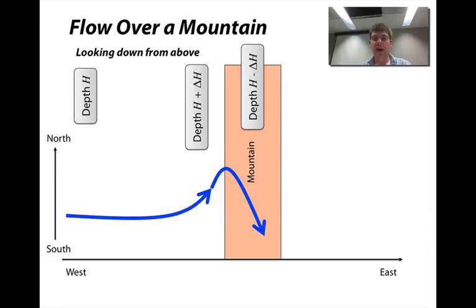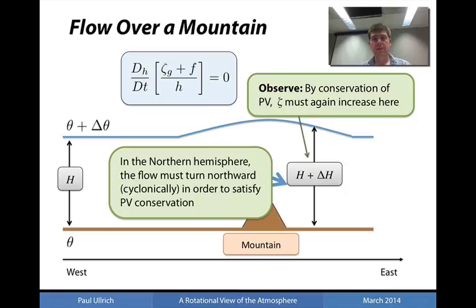Looking at this from above again, we have an initial northward twist in the fluid column in response to the increase in fluid column height, followed by a sudden decrease in the fluid column height leading to the generation of anti-cyclonic vorticity and hence a southward turn of the fluid column. So what happens then once the fluid column passes over the mountain? Again we have a scenario where the fluid height is larger than it was initially, and so potential vorticity conservation states that the relative vorticity must become positive and so the flow must again turn northwards in order to respond to this increase in column height.